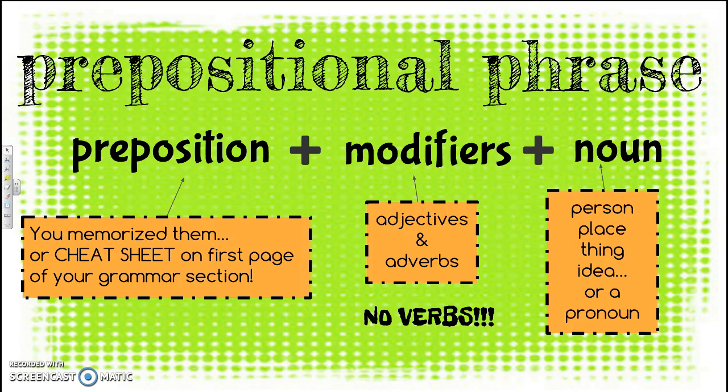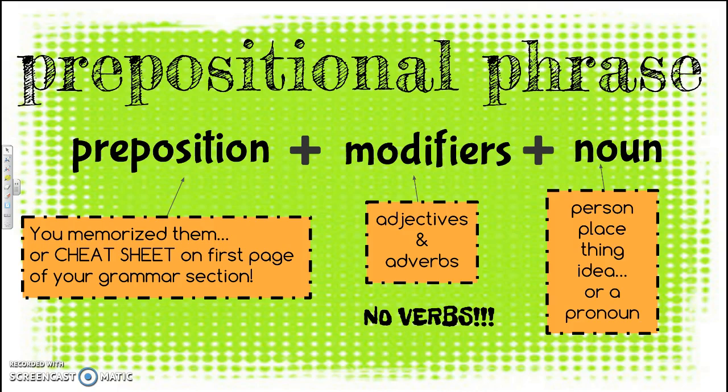So for example, 'after' is a preposition. 'After the football' — those are my modifiers — and then 'game' is a noun; it's a thing. 'After the football game.' No verbs.